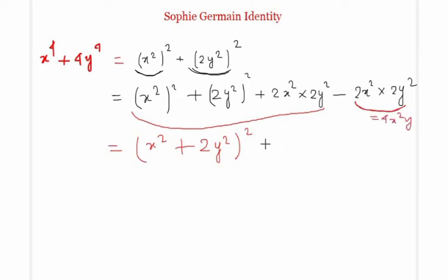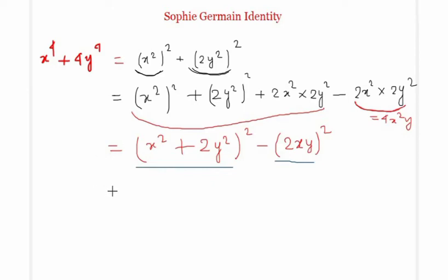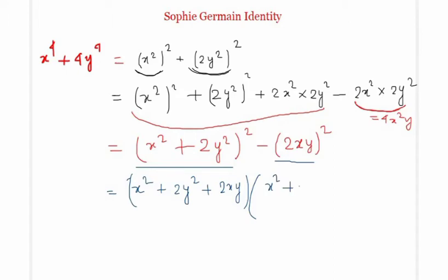We can write 4x²y² as (2xy)². Now what we can see is that the expression is in the form a² minus b². The formula for that is (a + b)(a − b). So we can write it as (x² + 2y² + 2xy)(x² + 2y² − 2xy).